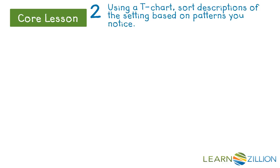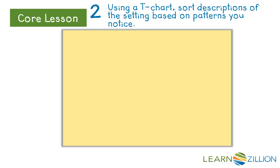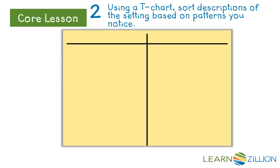When I think about the setting details I highlighted, I realize there is a pattern — a contrast that the author draws between reality and illusion. I'm going to use a T-chart, which is a two-column chart helpful when we want to put things into categories. We are going to sort the descriptions of the setting into two groups: things that are realistic, or real, and things that are not so realistic — they seem like illusion.